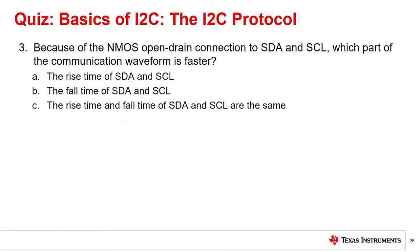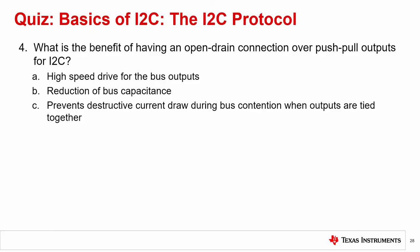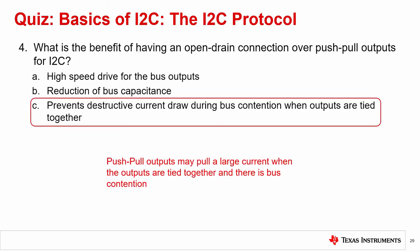Question three: Because of the NMOS open drain connection to SDA and SCL, which part of the communication waveform is faster? The correct answer is B — the fall time of SDA and SCL. Question four: What is the benefit of having an open drain connection over push-pull outputs for I2C? The correct answer is C — it prevents destructive current draw during bus contention when outputs are tied together.